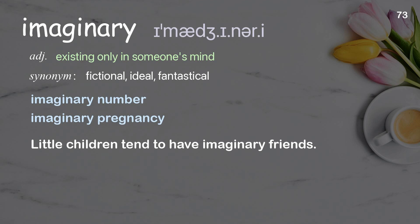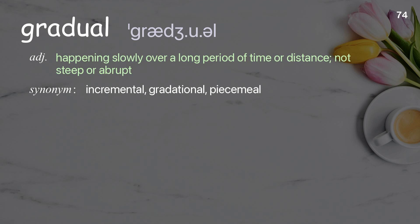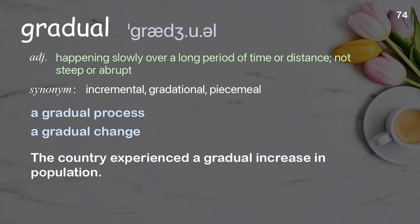Gradual: happening slowly over a long period of time or distance; not steep or abrupt. Examples: a gradual process, a gradual change. The country experienced a gradual increase in population.